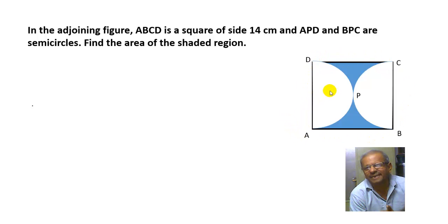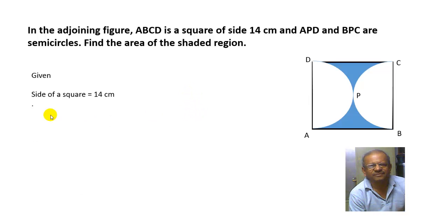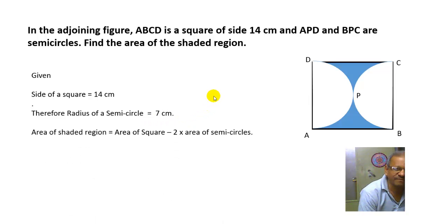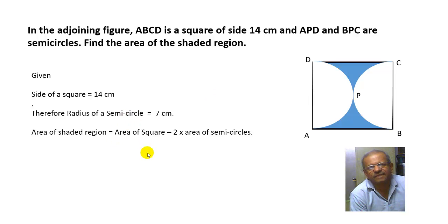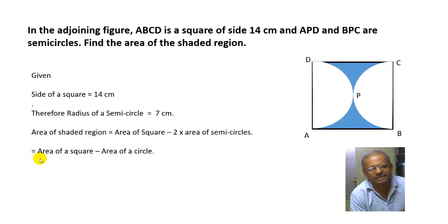The area of square ABCD minus twice the area of the semicircle. The side of the square is 14 centimeters and the radius of each semicircle is 7 centimeters. The area of the shaded region equals the area of square ABCD minus twice the area of the semicircles. Since twice the area of a semicircle equals the area of one full circle, you get: area of square minus area of circle.